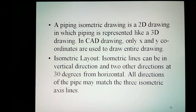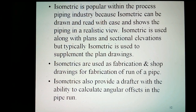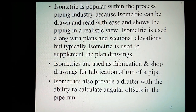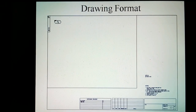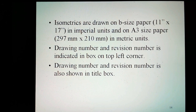Isometric layout: isometric lines can be in vertical directions or in two other directions at 30 degrees from horizontal. All directions that the pipe may take match the three isometric axis lines. Isometrics are popular within the process piping industry because they can be drawn with ease and show piping in a realistic view. Isometrics are used along with plans and sectional elevations, but typically are used to supplement the plan drawings. Isometrics are also used as fabrication and shop drawings for fabrication of a run of pipe, and provide the ability to calculate angular offsets in the pipe run.